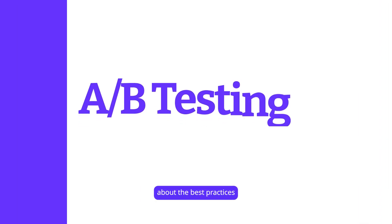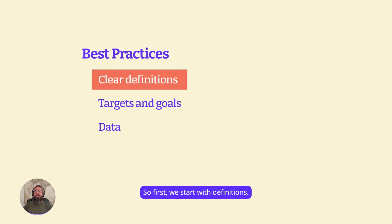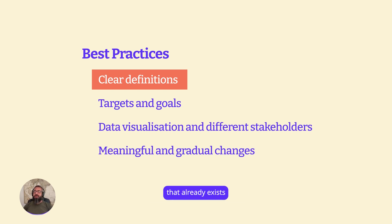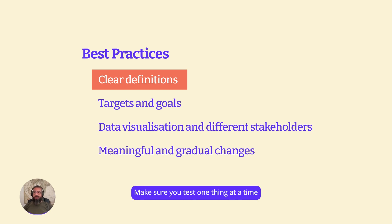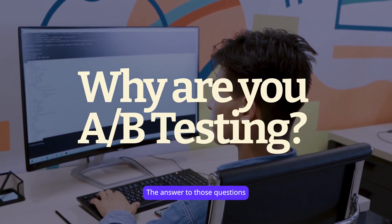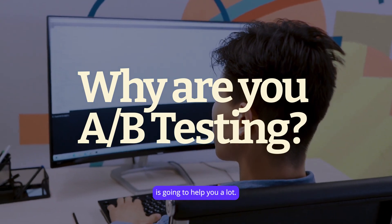Let's talk about best practices for A/B testing. First, start with definitions — make sure you have clear definitions. Define the what and the why: whether you're improving something that already exists or creating something new. Make sure you test one thing at a time, and question why you are A/B testing. The answers to those questions will help you a lot.